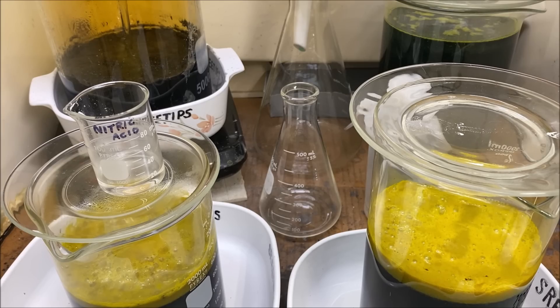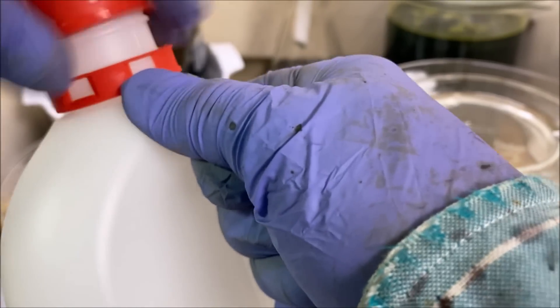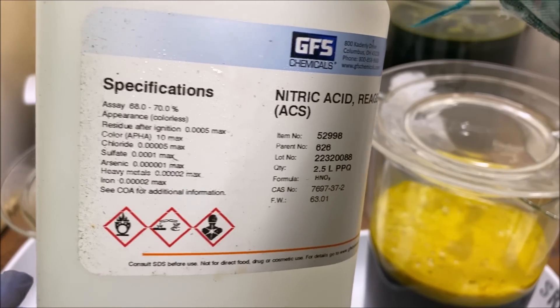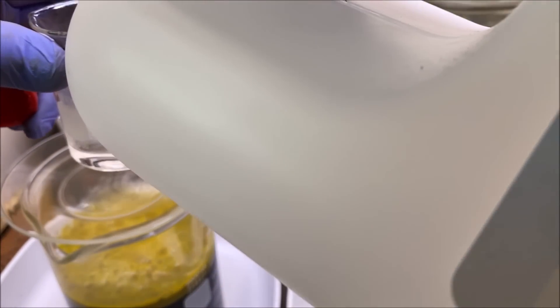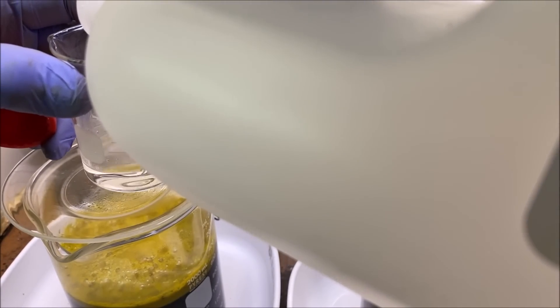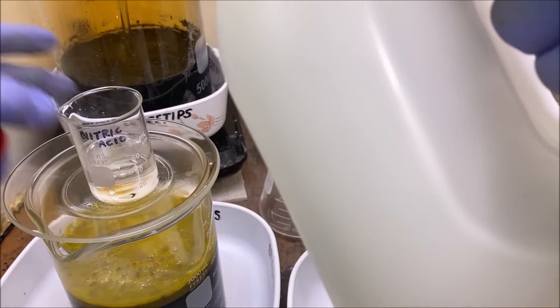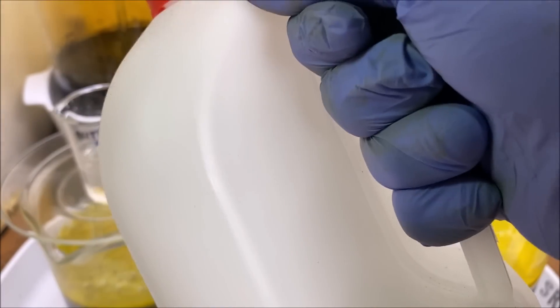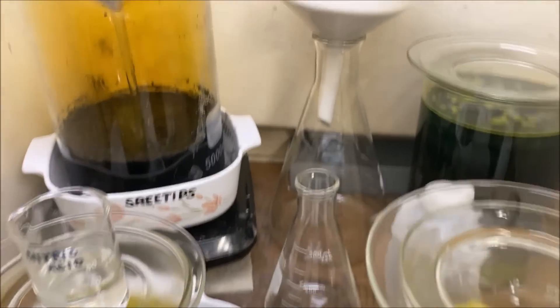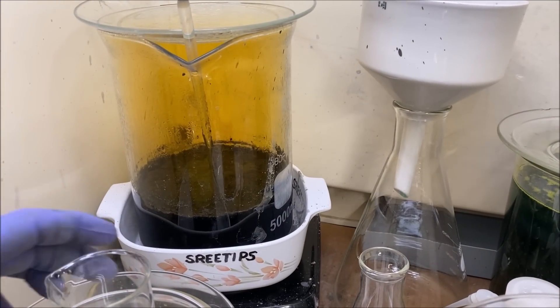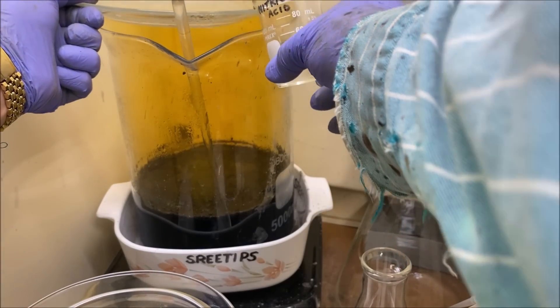Welcome back to part two of the silver cell anode filters refining series of videos. I've got some nitric acid and what I've been doing is adding small doses of nitric acid to our solids and just observing how it reacts. What I want to do is only get to a point where it's real hot.